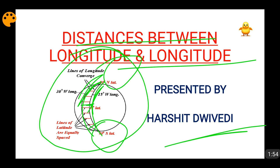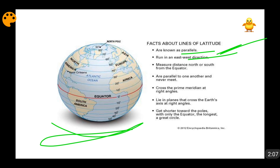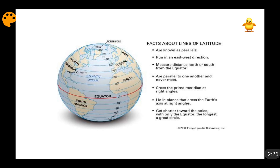Now I will tell you some basic information about latitudes. They are known as parallels — they run in an east-west direction, as you can see here. The distance between two latitudes is measured in the north-south direction. Latitudes are always parallel to each other; they never intersect with each other — they are concentric circles, which is why they are called parallels. They intersect with longitudes, which are the meridians, at right angles — that is, 90 degrees. The equator is the longest latitude.